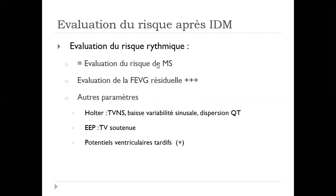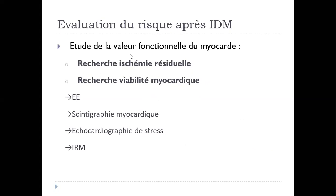Évaluation du risque rythmique. Évaluation du risque de mort subite. Évaluation de la fonction VG aussi. Évaluation de la valeur fonctionnelle du myocarde. Recherche d'ischémie résiduelle. Recherche de la viabilité myocardique, par généralement une scintigraphie myocardique de viabilité, une échographie à la dobutamine et une IRM cardiaque.